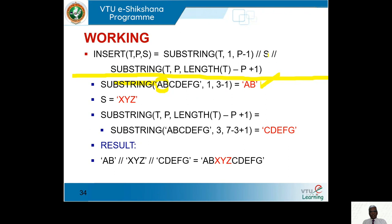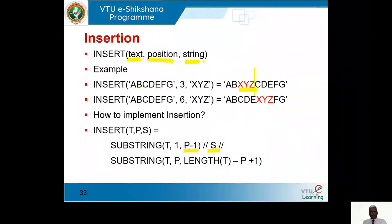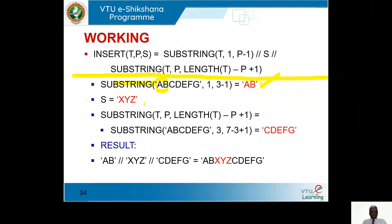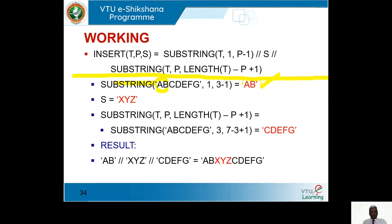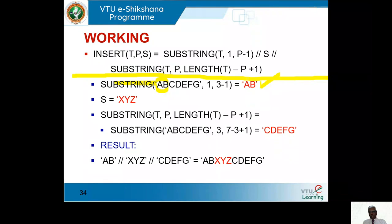Now we need to get the remaining portion — C, D, E, F, G — to concatenate again. The text is A, B, C, D, E, F, G. Starting from position 3, the length of text is 7. So 7 minus 3 plus 1 equals 5 characters: C, D, E, F, G. We calculate the substring after the position using the full length of the text minus the starting position plus 1.